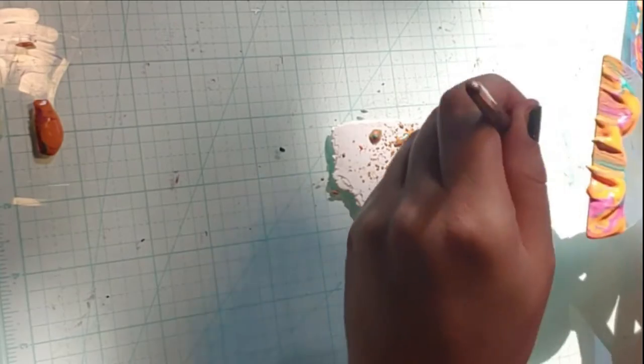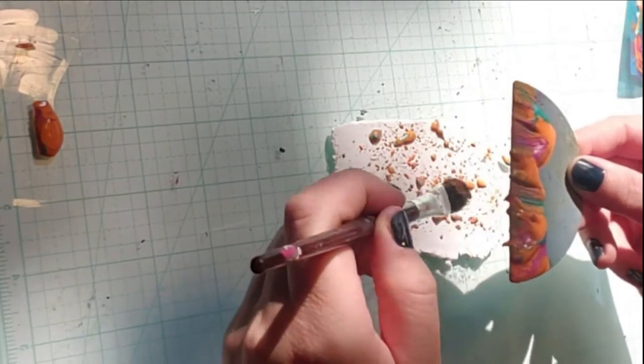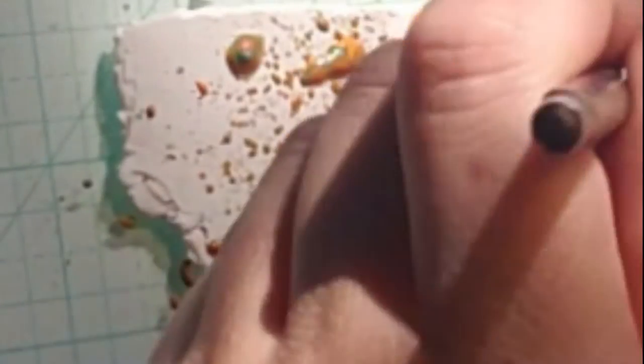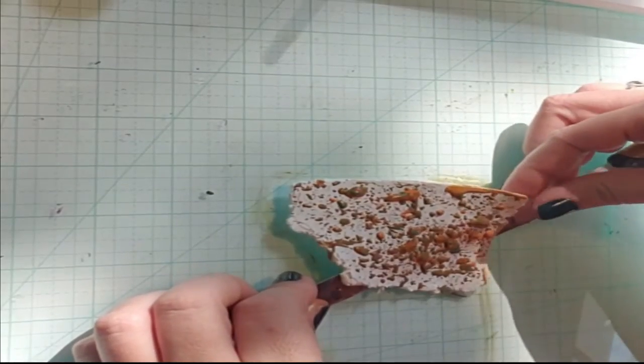So I rolled out a piece of white Kato on the thickest setting of my pasta machine and then I took a hard bristled brush. I find that the hard bristled brushes work much better with this splatter paint technique than a soft bristled brush. And then after I splattered all of my paint on the white,